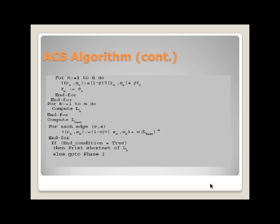lk is the length of the tour done by ant k. Here update edges belonging to lbest using global updating rule. At the last stage it will print shortest of lk.